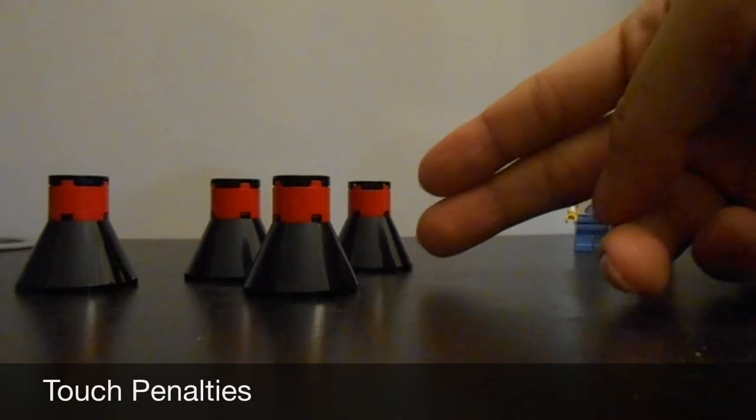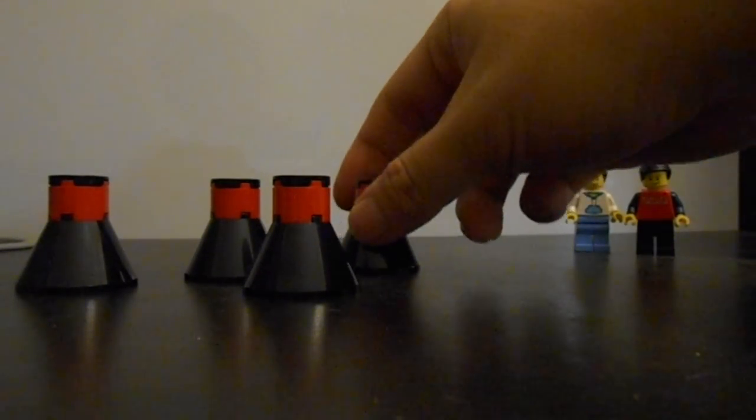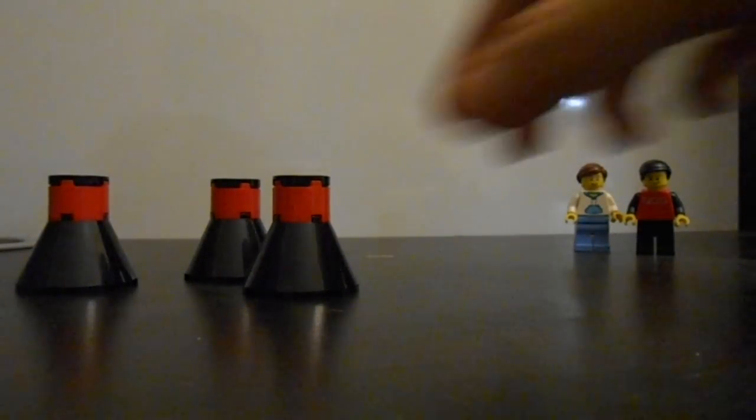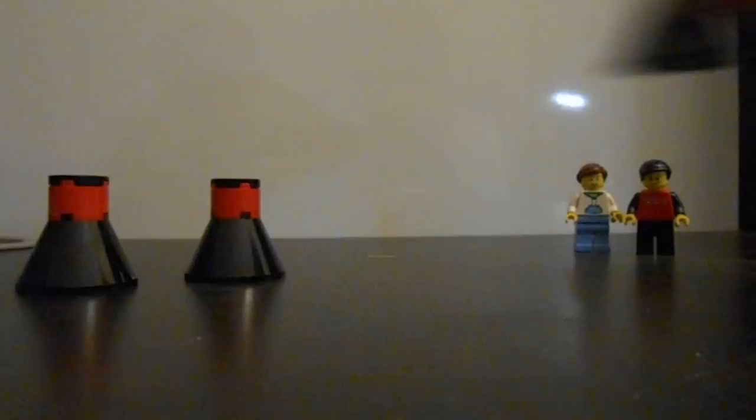Lastly, these black cones are touch penalties, which are taken away by the referee for each penalty the teams occur. At the end of the match, the number of cones remaining will earn points for the team.